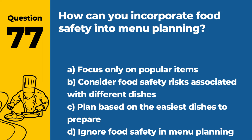Question 77. How can you incorporate food safety into menu planning? a. Focus only on popular items. b. Consider food safety risks associated with different dishes. c. Plan based on the easiest dishes to prepare. d. Ignore food safety in menu planning. Answer b. Consider food safety risks associated with different dishes. Incorporating food safety into menu planning involves considering the food safety risks that may be associated with different dishes, such as cross-contamination or temperature control.